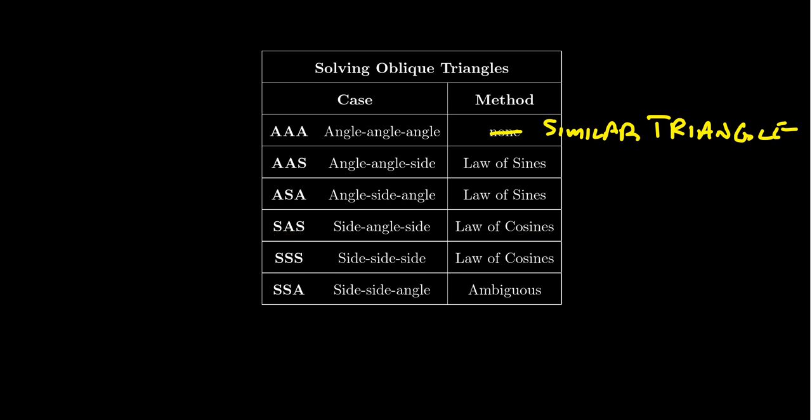The last possibility is the side-side-angle condition, SSA. In SSA, we know two sides of the triangle and an angle, but the angle is exterior to the two sides. We're going to refer to this as the ambiguous case. This case is more complicated and will be treated in its own right in its own lecture following the lectures about law of sines and law of cosines. So in this lecture, Lecture 24, we'll learn about the law of sines and how to use it to solve the AAS and ASA conditions using angle opposite sides. In Lecture 25, we'll talk about the law of cosines and show how to solve the SAS and SSS conditions. And then in Lecture 26, we'll consider the ambiguous case SSA all by itself.